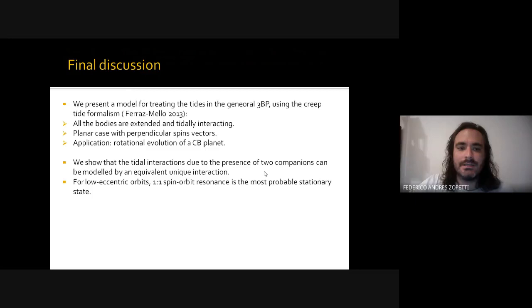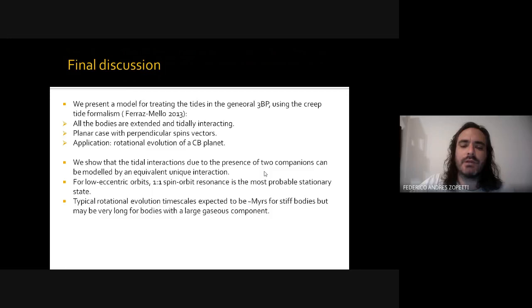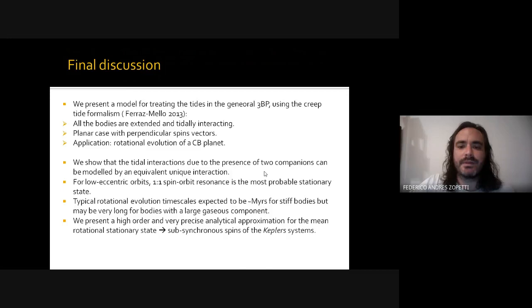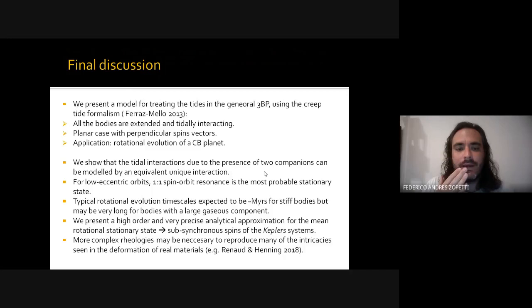We observe that for low-eccentricity orbits, the 1:1 spin-orbit resonance is the most probable stationary state. Typical rotational evolution timescales are expected to be of the order of megayears for stiff bodies, but for very gaseous planets they can be much longer. We have presented a high-order and precise analytical approximation for the mean rotational stationary state, which is shown to be good for estimating the sub-synchronous state of most Kepler circumbinary systems. Future work will require moving to even more complex rheological models for real materials. Thank you.